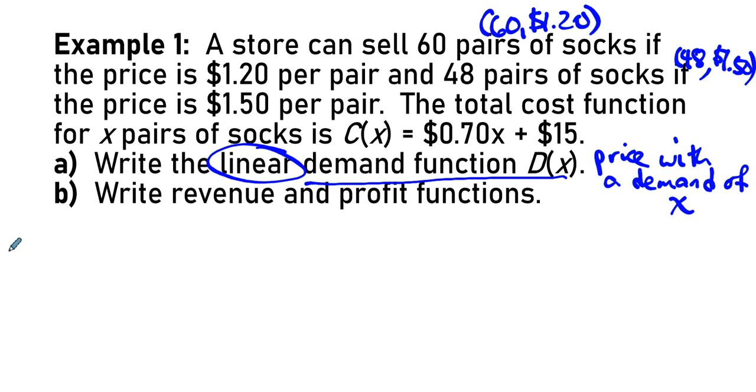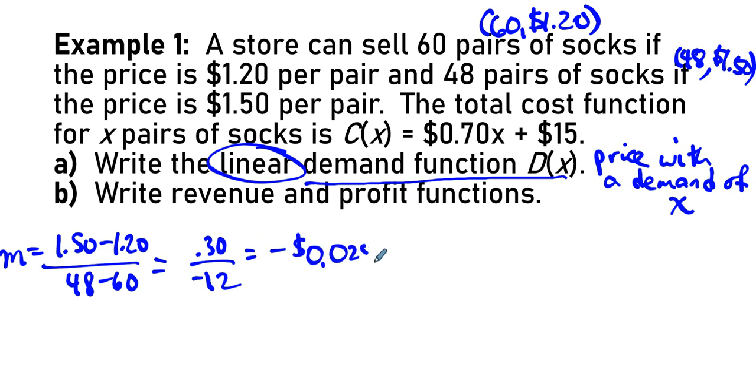How do we find the equation of a line? We find the slope. The slope is Y minus Y over X minus X. That's $0.30 divided by negative 12. What is $0.30 divided by negative 12? That's negative $0.025.